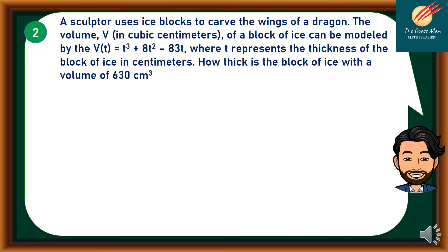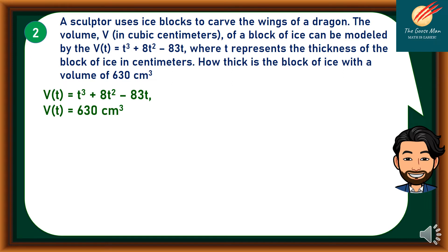Let's move on to the second problem. A sculptor uses ice blocks to carve the wings of a dragon. The volume b in cubic centimeters of a block of ice can be modeled by the function b(t) = t³ + 8t² − 83t, such that b(t) = 630 cubic centimeters. We want to find t when b(t) = 630.